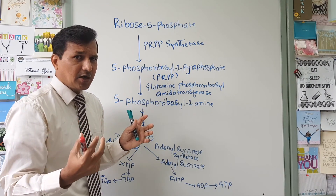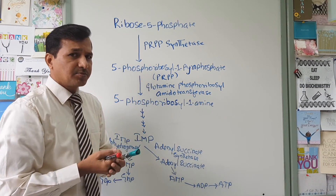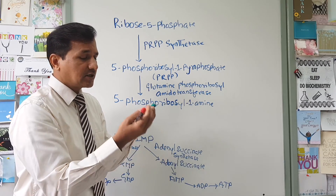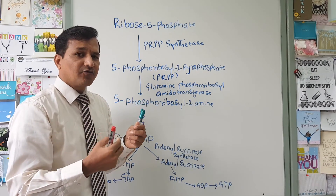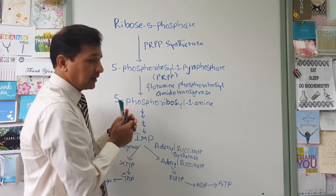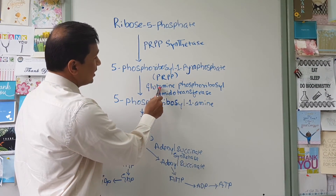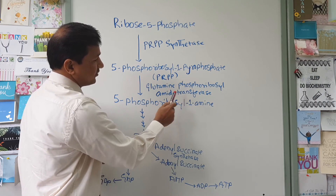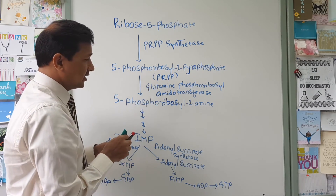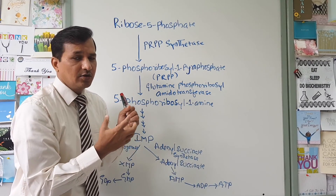Once you get PRPP — a sugar and phosphate molecule — you are going to build a base on this PRPP. To make a purine ring, which has 9 atoms, you get each atom from metabolic intermediates. The very first enzyme in building that purine base is glutamine phosphoribosyl amidotransferase, which brings the glutamine molecule and adds it onto PRPP.